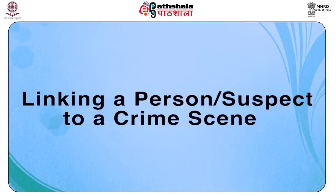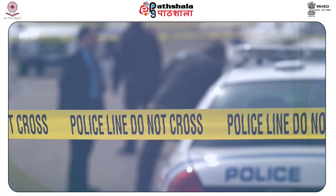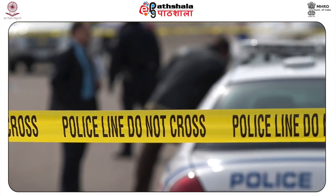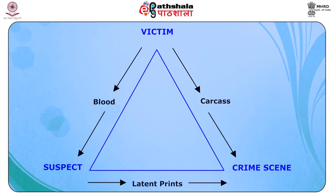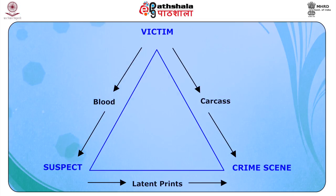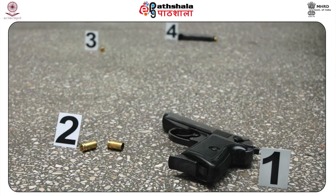Linking a person or suspect to a crime scene is another very common and significant function of physical evidence analysis. Perpetrators as well as victims often leave fingerprints, glove prints, blood, semen, hairs, fibers, soil, bullets, cartridge cases, tool marks, footprints, shoe prints, tire tracks, and objects at the crime scene — examples of deposited evidence. Depending on the type of crime, various kinds of evidence may be carried away, with stolen property being the most obvious example. Two-way transfers of trace evidence can be used to link a suspect, a victim, or even a witness to a crime scene.